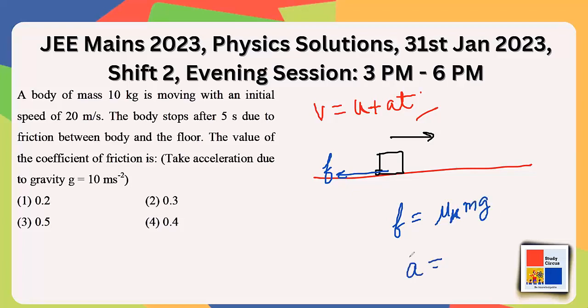Dividing the friction force by mass M gives us the retarding acceleration: mu_k times g. This is the retardation acting on the block.